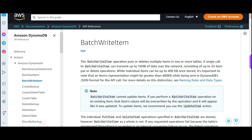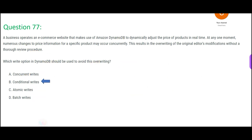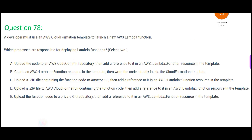Batch writes will only write data in batches — multiple updates in one go. So if you want to update many products at once, you use batch writes. The purpose is very different. So conditional writes is the final answer for this question.